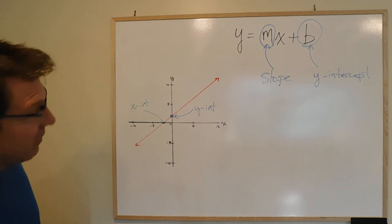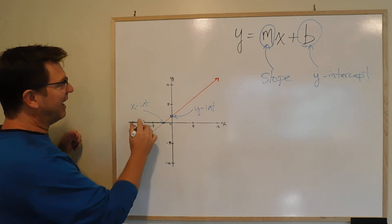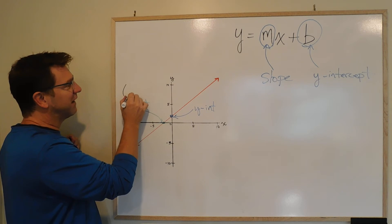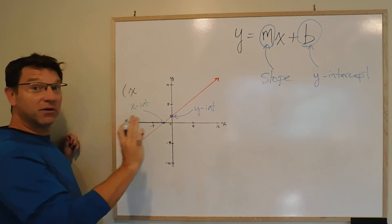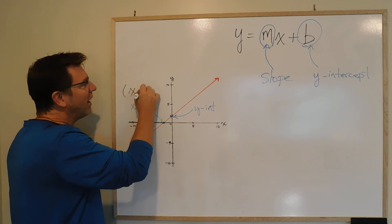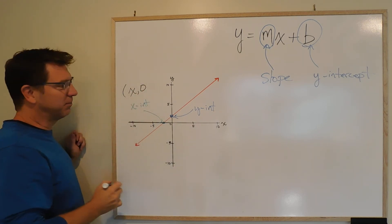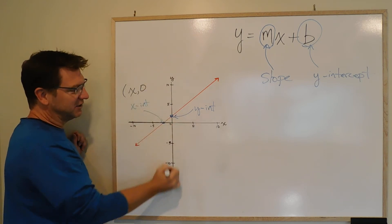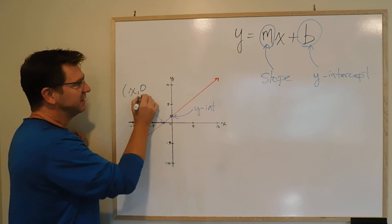The one thing that's important to note is an x-intercept always has an x-value of something. We don't know what that is, I mean in this case it looks like a negative 2. But the y-value is always 0, because it's along this line. So it's not positive y, and it's not negative y. The y-value is always 0.